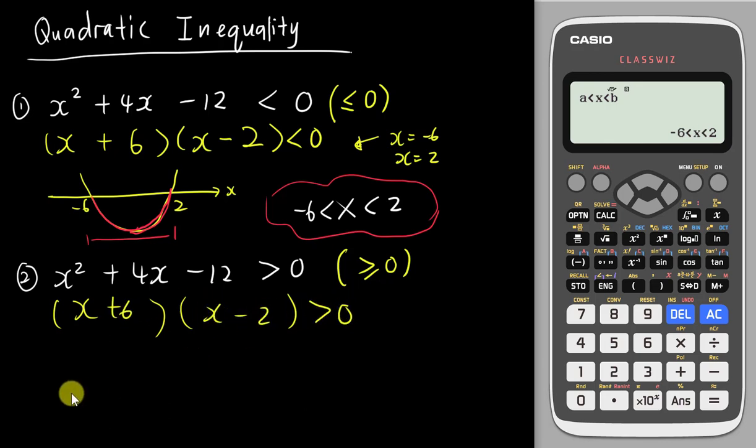If I draw out the diagram, this is the x-axis. Greater than zero means above the x-axis. If you see the graph carefully and focus on the x value, you have negative 6 and 2 here. Above the x-axis, the graph is only this part and this part.